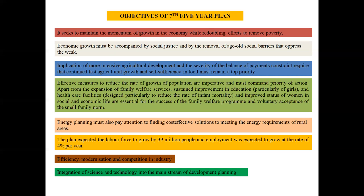Countries that fail at social justice cannot improve themselves in terms of the Human Development Index because of improper allocation of resources. That is why one of the key objectives of the Seventh Five-Year Plan was to achieve economic growth as well as social justice.